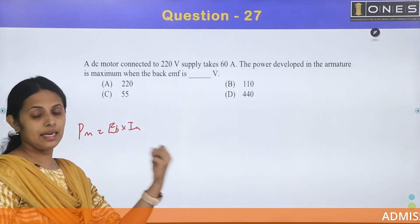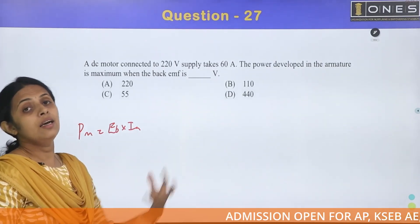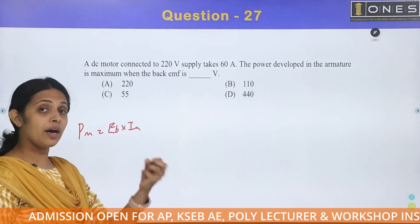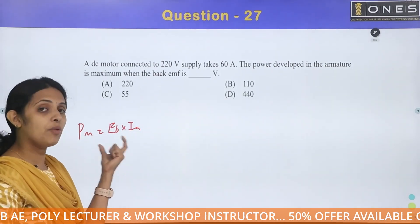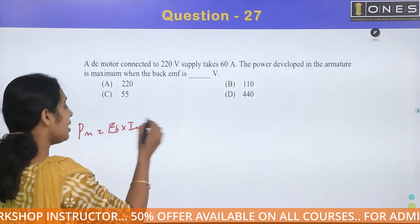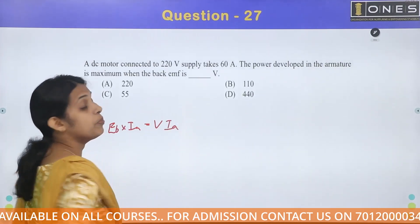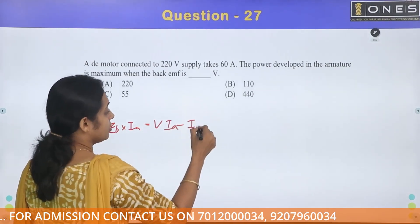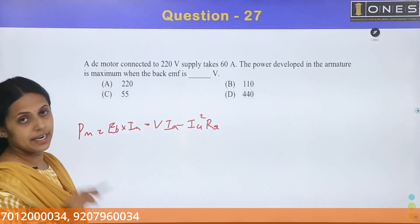In the armature, there is electrical to mechanical energy conversion. In a DC machine, there is stator and rotor. Mechanical power developed is proportional to armature voltage × armature current, i.e., Eb × Ia. Input power is V × Ia minus losses, which is Ia² × Ra.